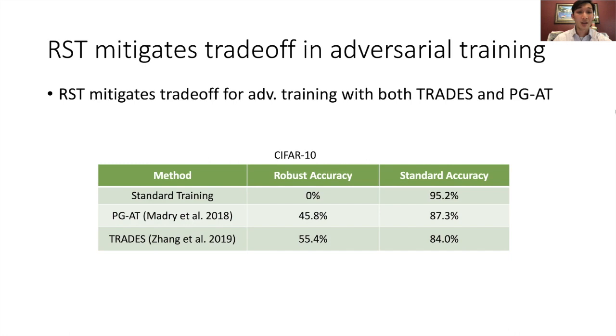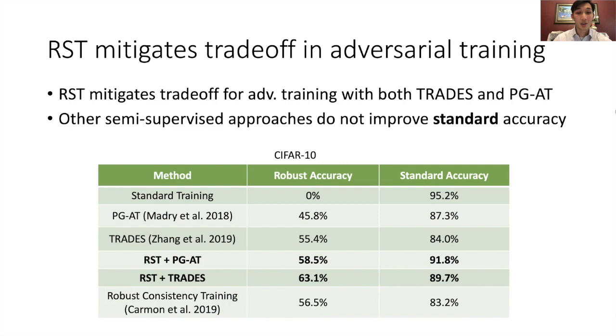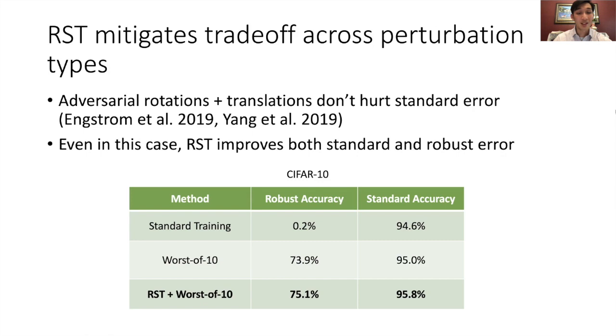Empirically, RST mitigates the trade-off in adversarial training with both trades and the projected gradient, or PGAT, variants. While both trades and PGAT decrease the standard accuracy, applying RST to these methods improves both the standard and robust accuracies. Additionally, just applying a semi-supervised method on top of adversarial training does not improve the standard accuracy. Now, what about the case where adversarial training does not hurt standard error? Does it still help? We find that RST also mitigates the trade-off across different perturbation types, including adversarial rotations and translations that do not hurt the standard error.